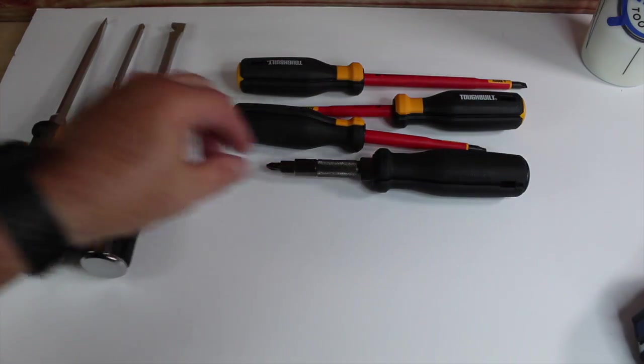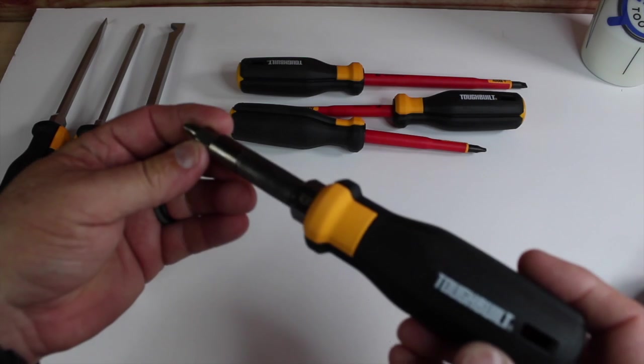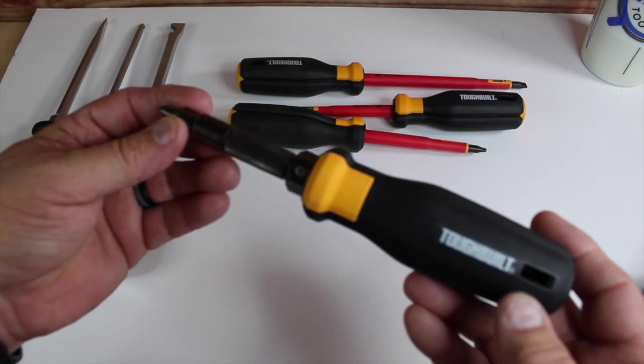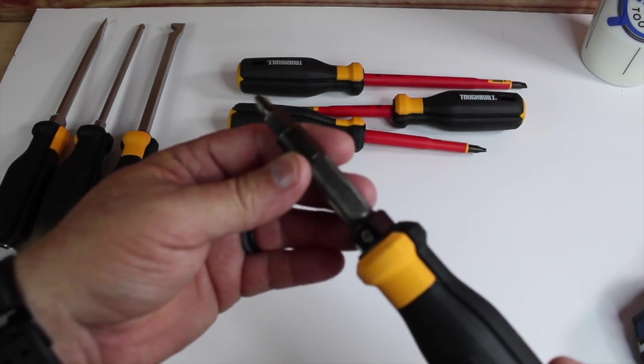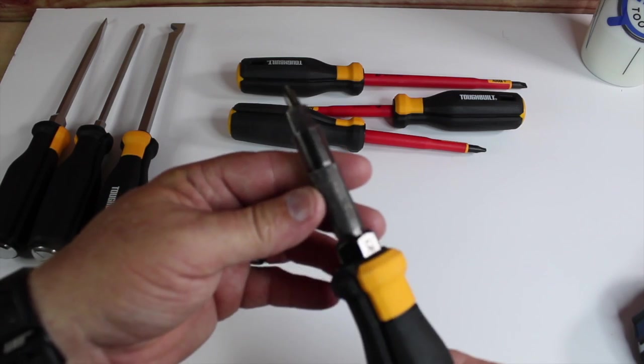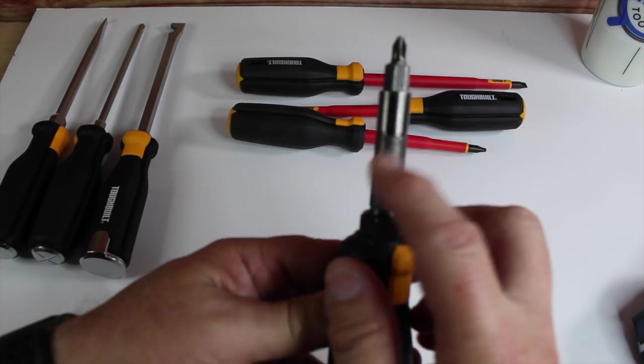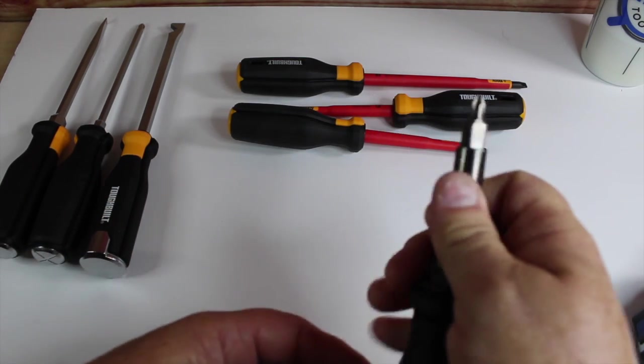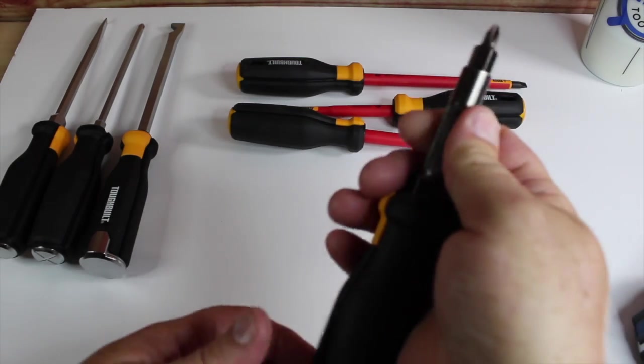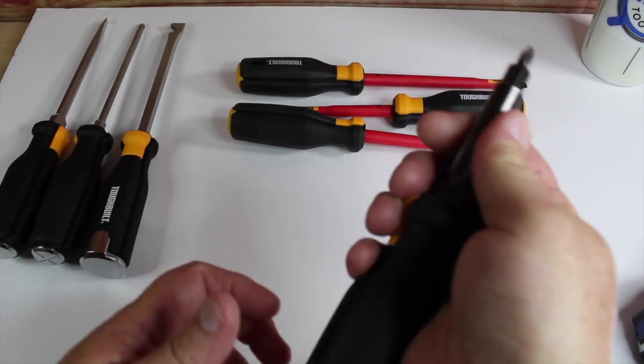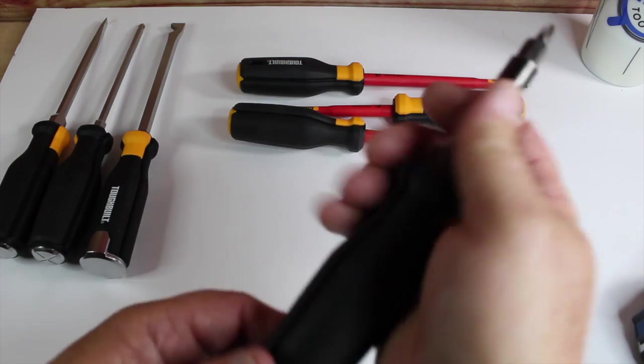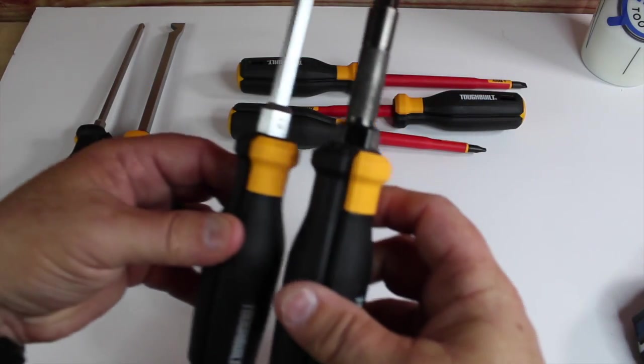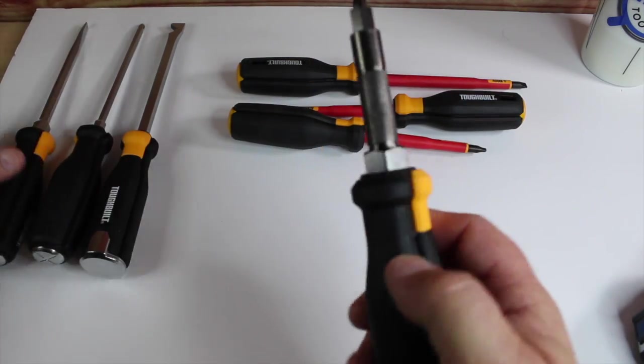And then you have the ToughBuilt 12-in-1. This thing is fantastic. I really like the knurling around here, so you can—it's a little difficult to do in the hand, but because it's got a good size handle, it's pretty much the same handle as the other ones.